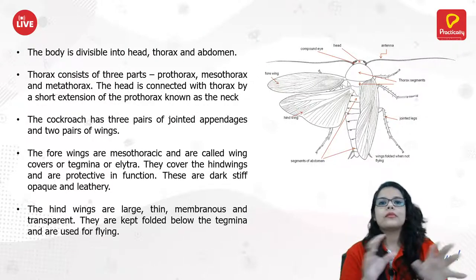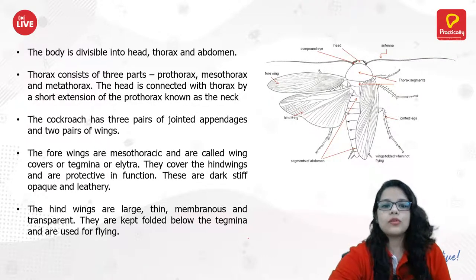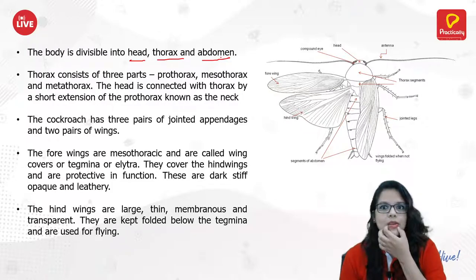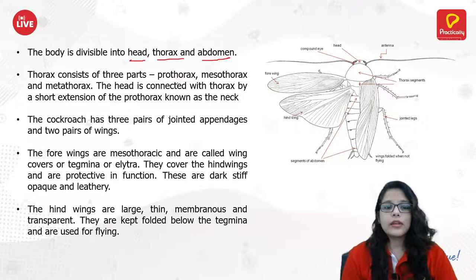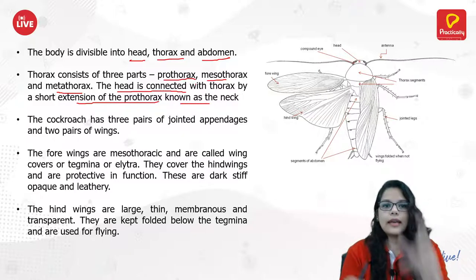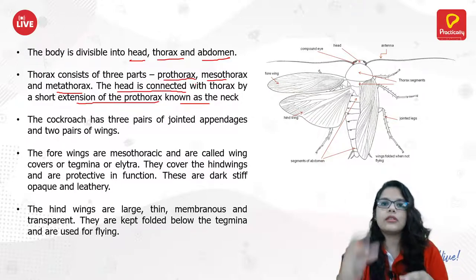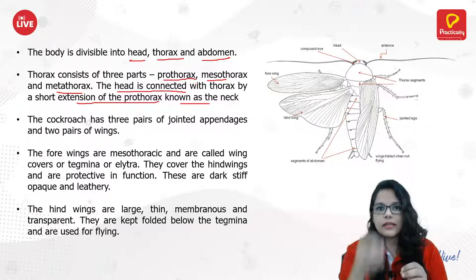The body is divided into three parts: head, thorax, and abdomen. The thorax itself is divided into three parts: prothorax, mesothorax, and metathorax. The head is connected to the thorax by a short extension of the prothorax known as the neck. So prothorax is on top and attaches to the head via the neck.